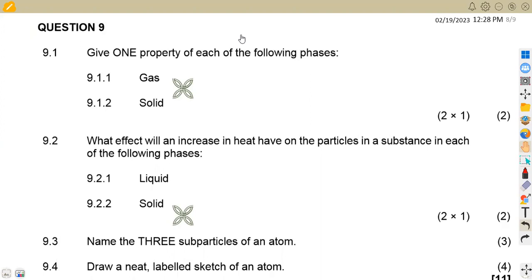So we have got 9.1, where we are given the question: give one property of each of the following phases. So we are given to describe the properties that we have if we are in a gas state. So what we have actually in a gas state, remember, the particles, they are free to just move, they are moving freely. So we can state here that we can say there is no definite shape. So if there is no definite shape, that means we do not have a definite volume in this case.